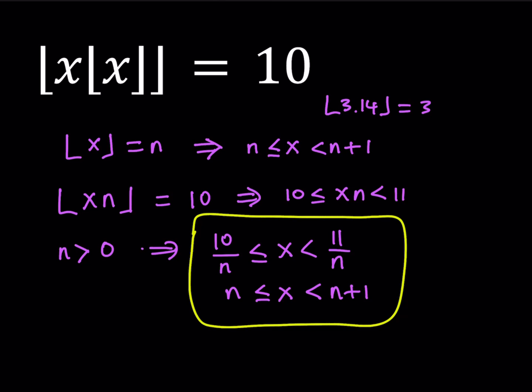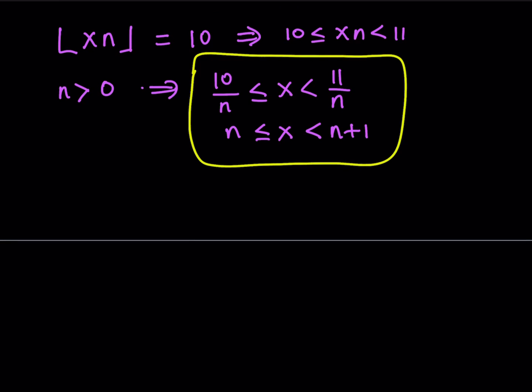So how do you solve this system of inequalities in two variables? Since n is an integer, it's going to be easier to solve. Here's one thing you can consider. We know that x is going to be greater than or equal to n, and also at the same time less than 11/n. So we can say that this boundary value is always going to be less than this boundary value. That gives us n is less than 11/n, and if you work it out, this is n² - 11 < 0.